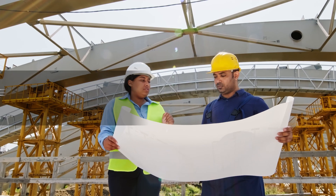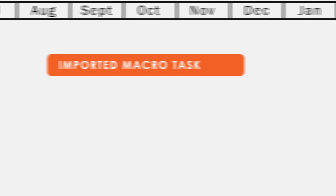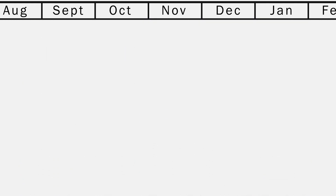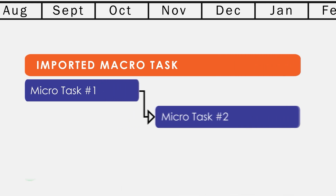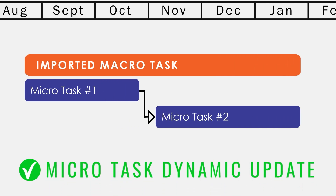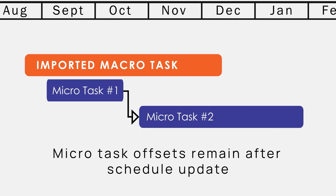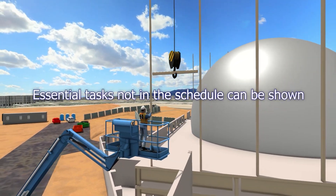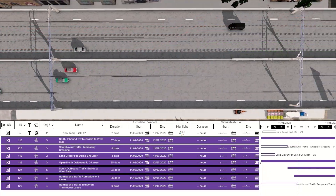Other solutions have tried to combine the two areas, but with difficulties. Fuser has created a new micro-schedule logic which does not affect macro-schedule tasks and automatically adjusts with macro-schedule updates. In Fuser, micro-tasks can also be offset from macro-task dates, allowing you to schedule essential tasks that do not fall within the macro-schedule logic.